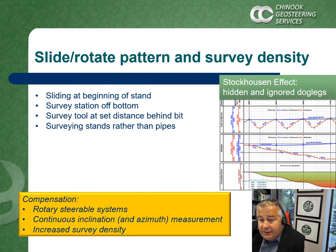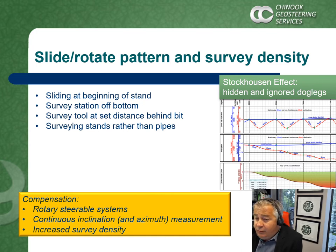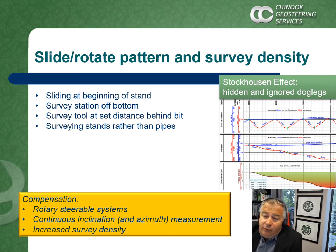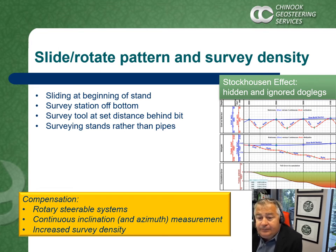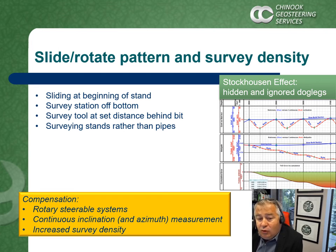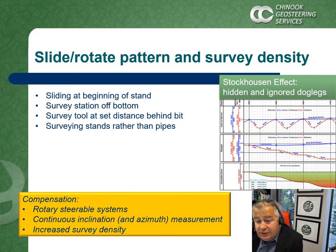The Stockhausen effect looks at hidden doglegs resulting from survey station positions relative to slide versus rotate patterns. Surveys are usually shot after drilling a full pipe or sometimes a full stand, with tools placed off bottom. If the survey tool falls at a slide spot, readings will be slightly different compared to a few meters ahead or before where the drill string was rotated. Depending on BHA distances, these errors can compound, leading to apparent inclination drift and significant errors in well path TVD. Rotary steerable systems largely eliminate this type of error, and continuous inclination readings can be used to correct surveys. Increased survey density also diminishes the effect.